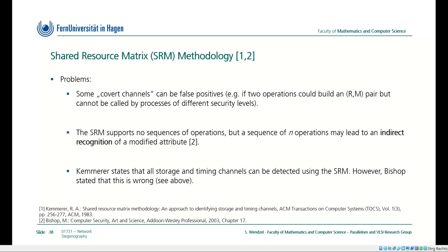There are some problems. Some covert channels can be false positives. For instance, if two operations could form an RM pair but cannot be called by processes of different security levels, then it cannot be exploited as a covert channel — it's not really there because it will never be created. Also, the SRM supports no sequences of operations, but a sequence of N operations may lead to an indirect recognition of a modified attribute. Maybe we need to call different operations in a row to infer information about some attribute, and this is not directly recognizable using the SRM.